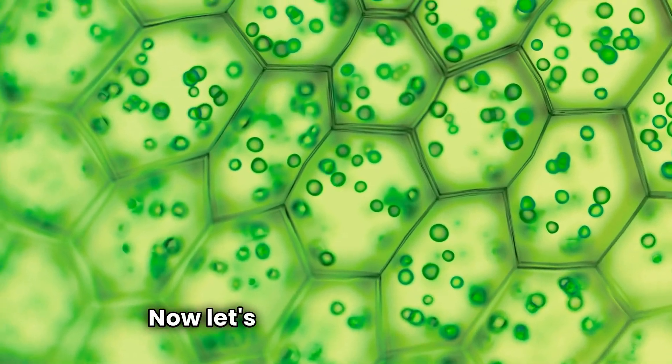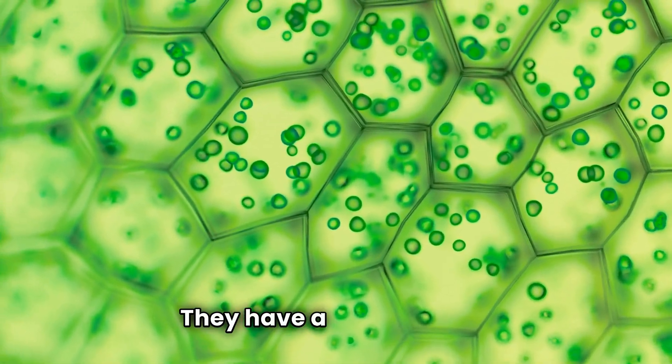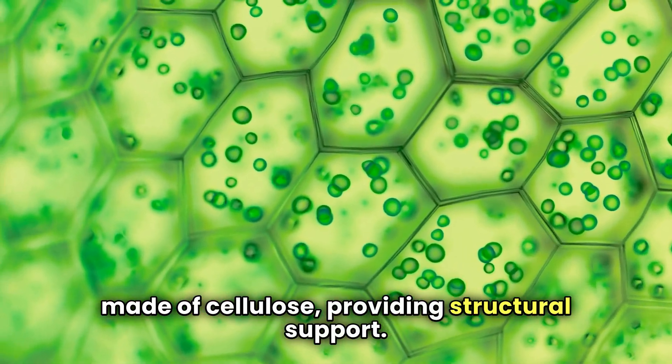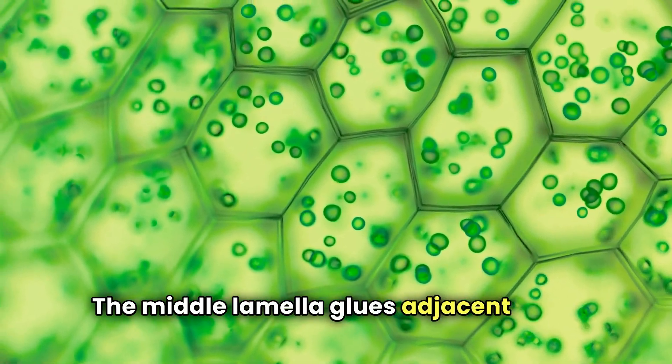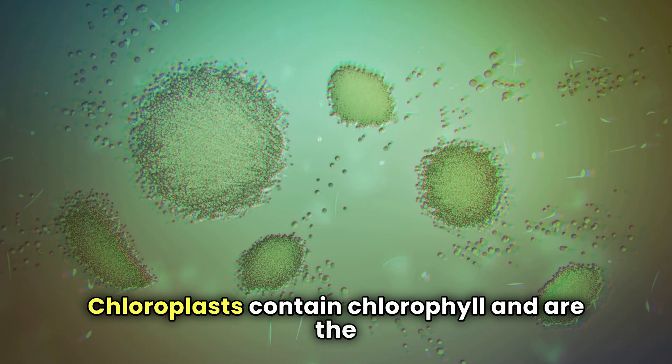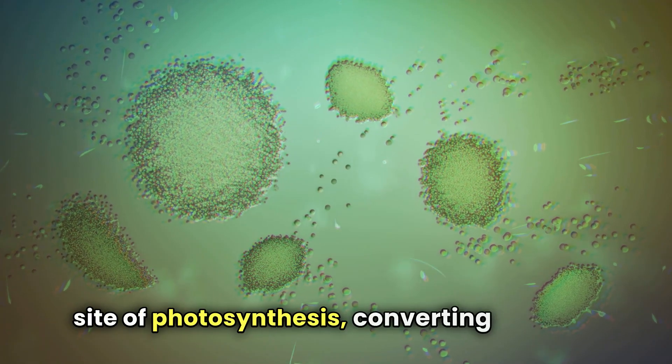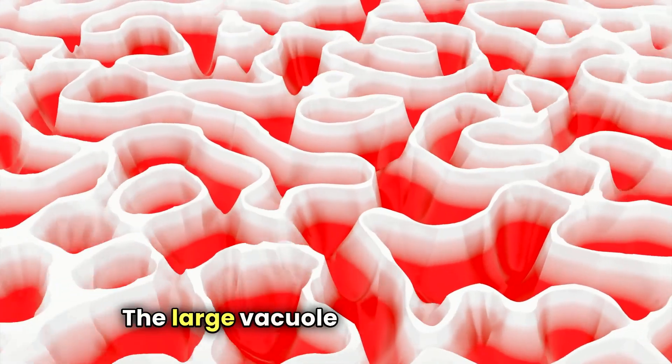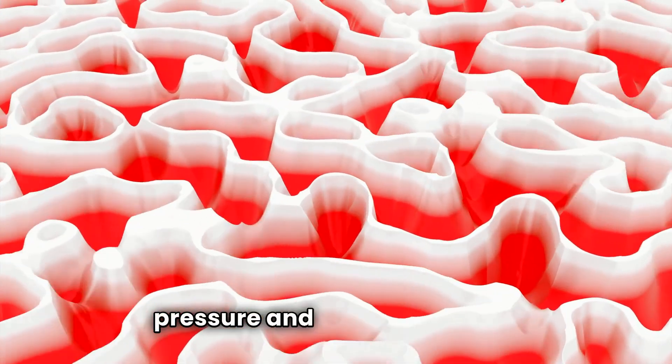Now, let's talk about plant cells. They have a rigid cell wall made of cellulose, providing structural support. The middle lamella glues adjacent plant cells together. Chloroplasts contain chlorophyll and are the site of photosynthesis, converting light into chemical energy stored in glucose. The large vacuole maintains turgor pressure and stores nutrients.